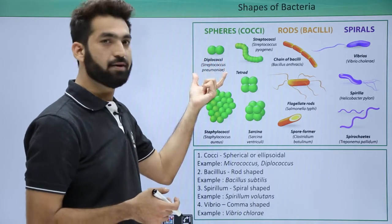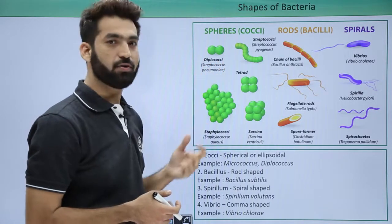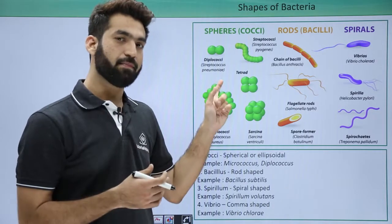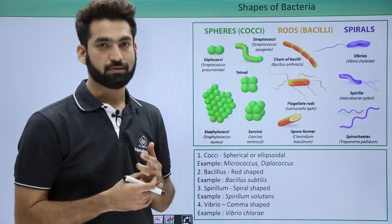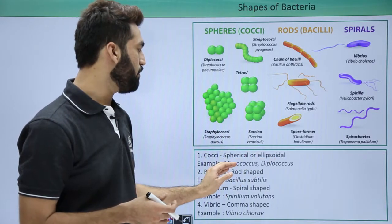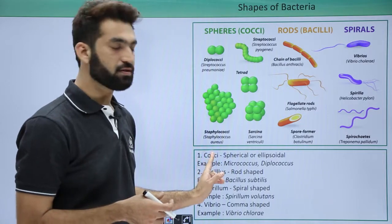This happens in Streptococcus pneumoniae, which causes pneumonia and was used in Griffith's work on transformation. Streptococcus pneumoniae as Diplococcus and Micrococcus are examples of cocci-shaped bacteria, which are spherical in shape.